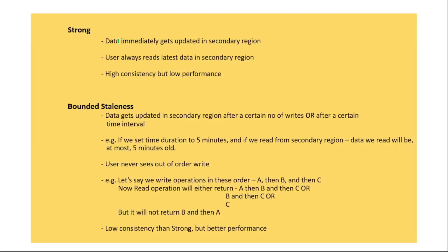Let's discuss each consistency level in detail. First, strong consistency means data is immediately updated in the secondary region and the user always gets the latest data when reading from there. It provides high consistency but low performance, and the price is also high with strong consistency.